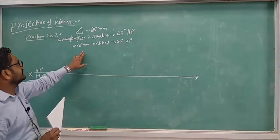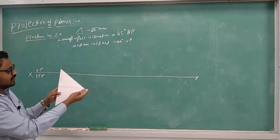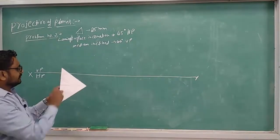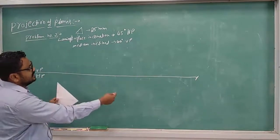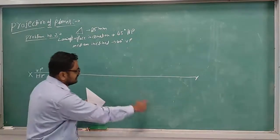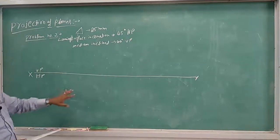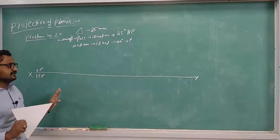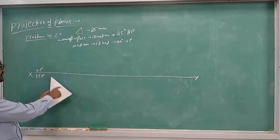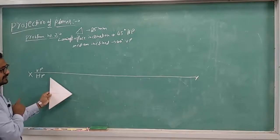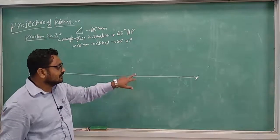Now the last step — they give the median inclination. The median goes from a corner to the midpoint of the opposite edge. But a problem comes here: when we make the inclination, the median length changes from step to step. In the first step the median has actual length X, but in the second step the same median is reduced to Y. So we need to find the beta angle. We cannot place the median at the given inclination directly.